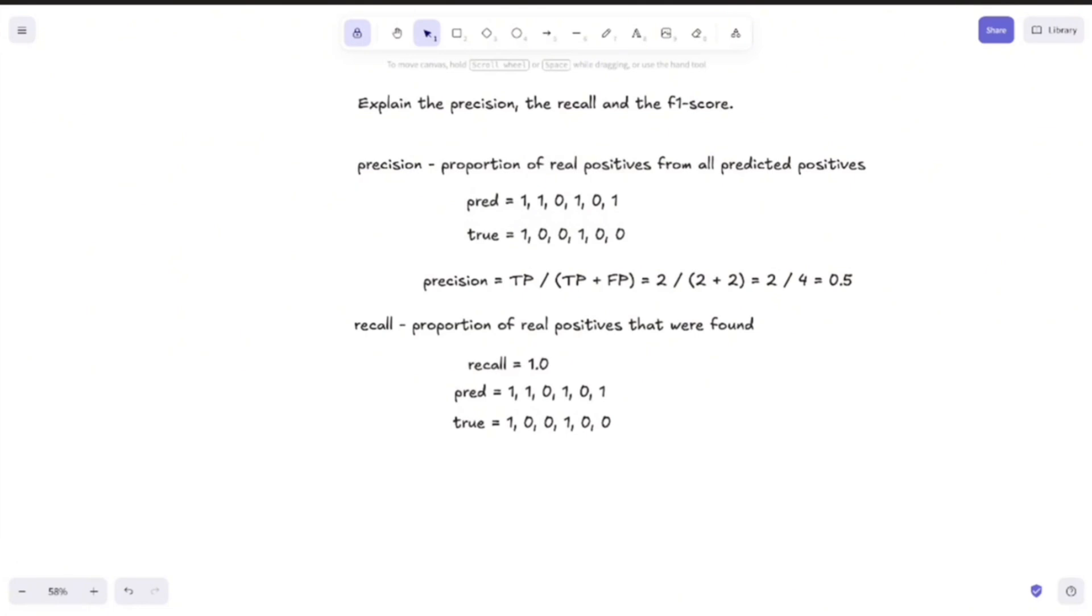However, I've copied the two examples here, and if we had here a 1, and we predicted 0, then the recall value would change, because we have this positive sample here that we incorrectly labeled as negative. And in this case, the recall would be the number of true positives divided by the number of true positives plus the number of false negatives, which in our case would be 2 divided by 2 plus 1, or 2 divided by 3, which is 0.66.